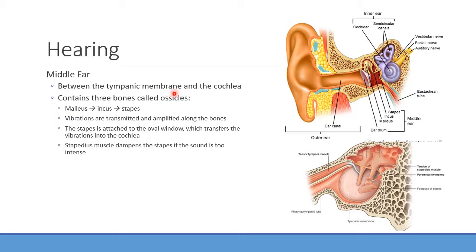Between the tympanic membrane and cochlea are the ossicles: the malleus, incus, and stapes. Vibration travels from the tympanic membrane through those bones in that order, ultimately vibrating the oval window and transmitting sound waves into the cochlea. When sounds are too loud, we can limit how much vibration reaches the cochlea using the stapedius muscle, which connects to the stapes. By tensing it, we restrict movement of the stapes against the oval window.